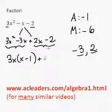2x minus 2, I can factor out a 2. 2x divided by 2 is x. Negative 2 divided by 2 is negative 1.